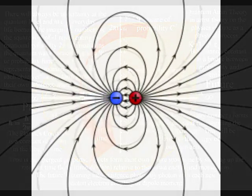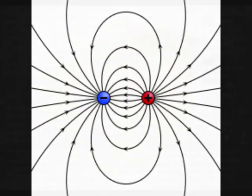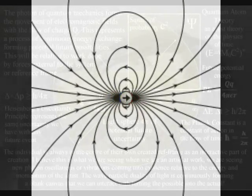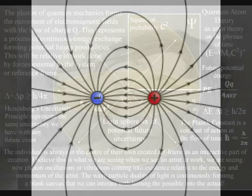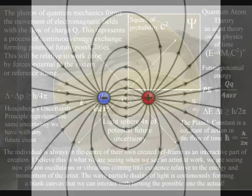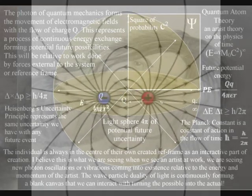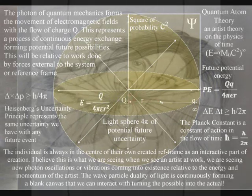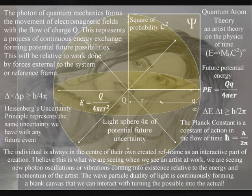The light photon of quantum mechanics is the carrier of the electromagnetic force that forms the movement of positive and negative charge with the flow of electromagnetic fields. We see and feel this process of continuous change as the flow of time. In this theory, time is an emergent property with a future continuously coming into existence light photon by light photon with each new photon-electron coupling or dipole moment.